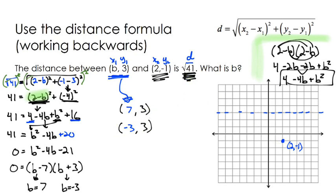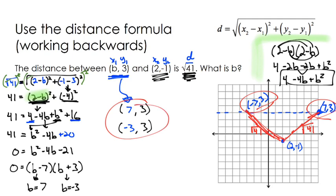The two points that are the correct distance from the given point are 7, 3 — going over to x equals 7 on the line — and negative 3, 3. Hopefully you can see that both points appear to be the same distance away from the given point: that red distance is the square root of 41, and that red distance is also the square root of 41. So we actually have two different solutions: b equals 7 or b equals negative 3.